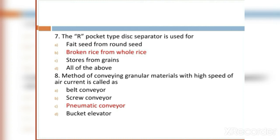MCQ 8: Method of conveying granular material with high speed of air current is called as: Option A: belt conveyor. Option B: screw conveyor. Option C: pneumatic conveyor. Option D: bucket elevator. The right answer is pneumatic conveyor.